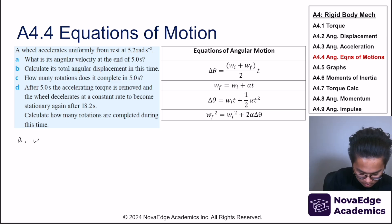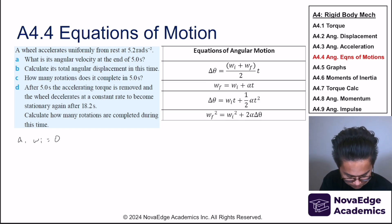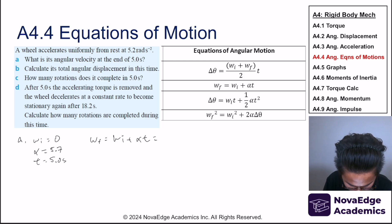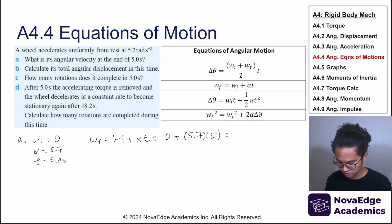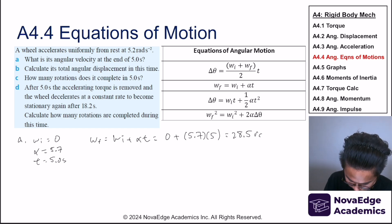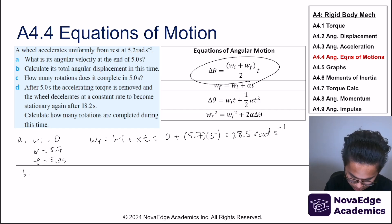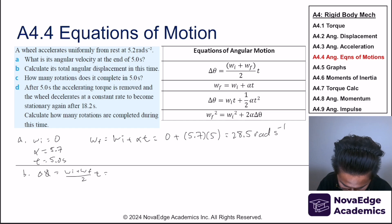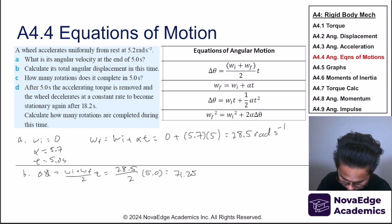For another problem: initial angular velocity is zero, angular acceleration is 5.7 rad/s², and time is 5.0 seconds. Final angular velocity ωf = ω₀ + αt = 0 + 5.7×5 = 28.5 rad/s. Total angular displacement using the appropriate equation of motion gives 71.25 radians.